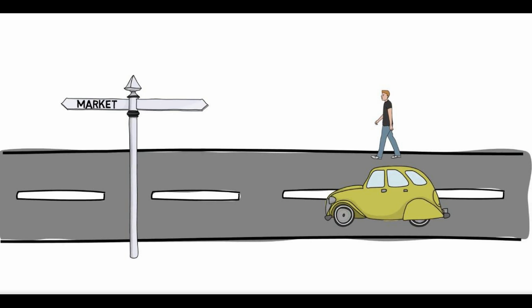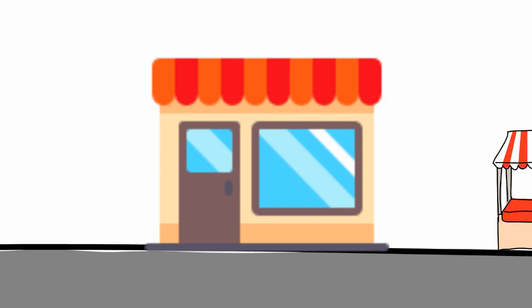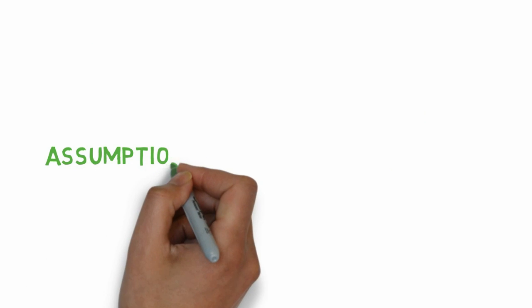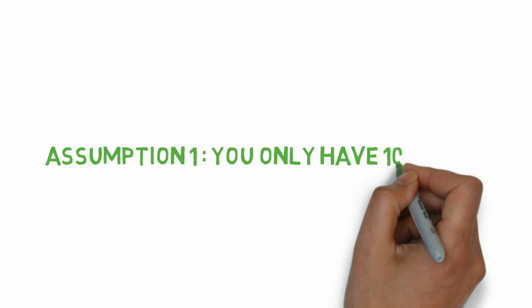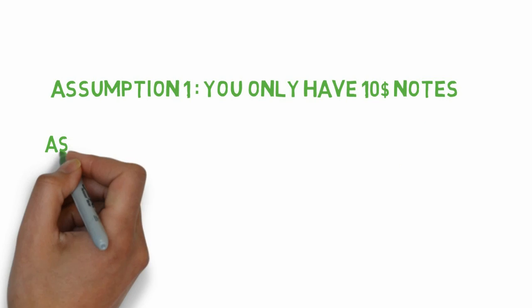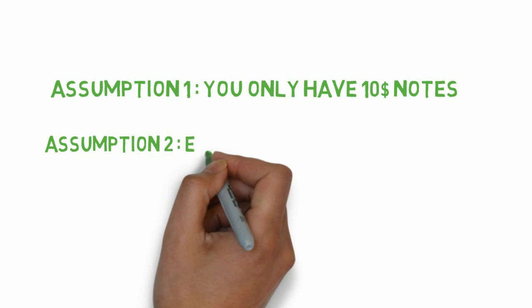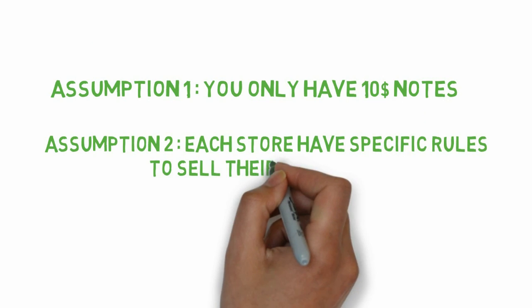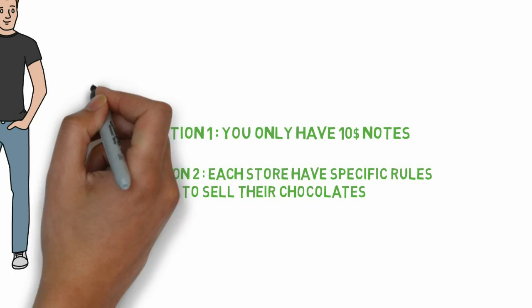Imagine you have gone to a market to buy chocolates. There are three stores in the market: Store 1, Store 2, and Store 3. Let's make two assumptions. Assumption 1: you only have $10 notes. Assumption 2: each store has some specific principles to sell their chocolates.